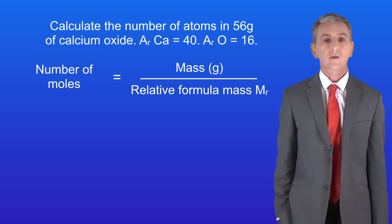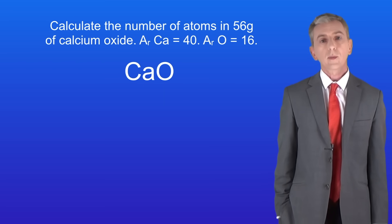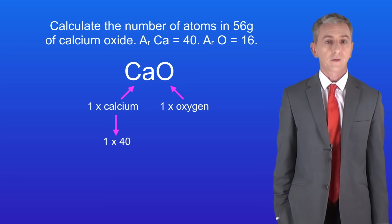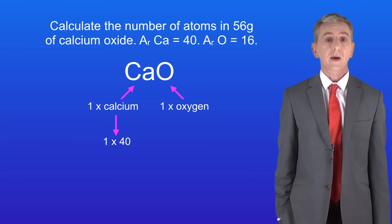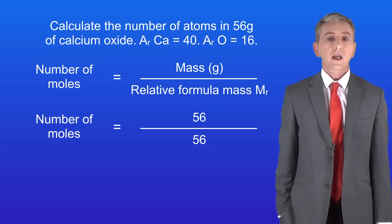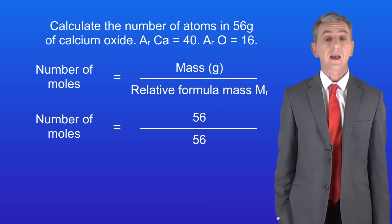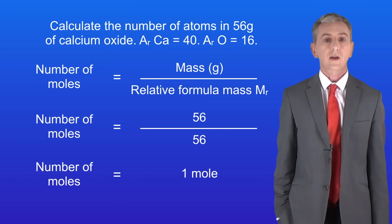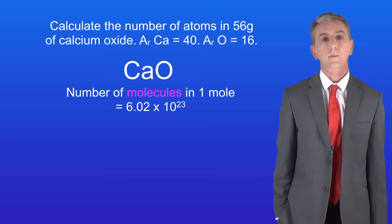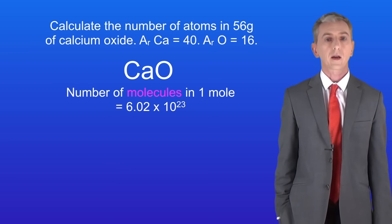First we need to work out the relative formula mass of calcium oxide. It has one atom of calcium and one atom of oxygen. Calcium has a relative atomic mass of 40 and oxygen has a relative atomic mass of 16, so the relative formula mass is 40 plus 16, giving us 56. We calculate the number of moles by dividing 56 by 56, giving us one mole of calcium oxide. We know that the number of molecules in one mole is Avogadro's constant — 6.02 times 10 to the power of 23 — so we've got 6.02 times 10 to the power of 23 molecules of calcium oxide.